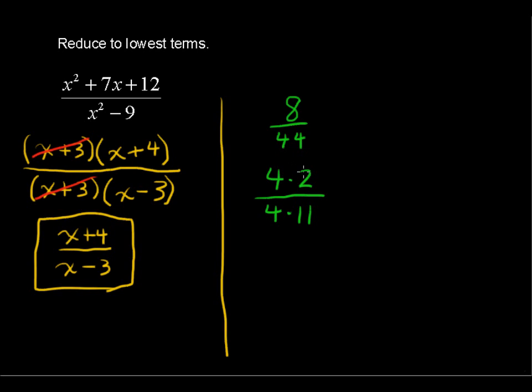So you make it as a product of something, products of two numbers, two or three or four numbers. Here we made it a product of two binomials. But you're making it a product of things.